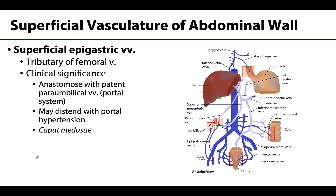Like all areas of the body, the abdomen has superficial vasculature. One superficial vein worth noting for clinical insight is the superficial epigastric vein, a tributary of the femoral vein. This vein typically anastomoses with the para-umbilical vein. The para-umbilical veins are small tributaries of the portal system, making this one of the portal-caval or portal-systemic anastomoses in this region.